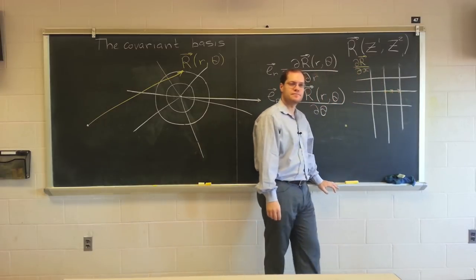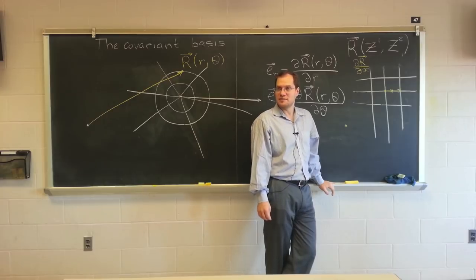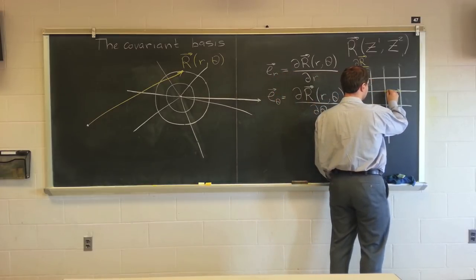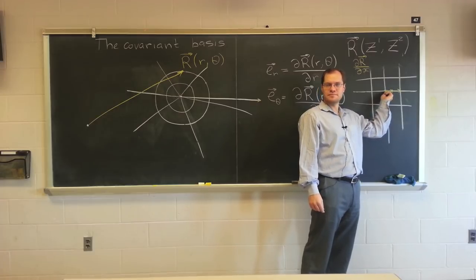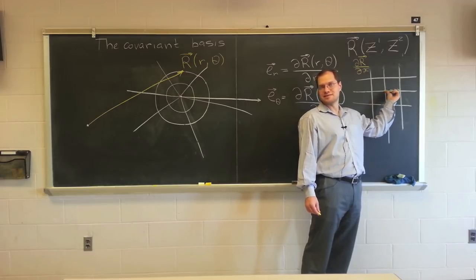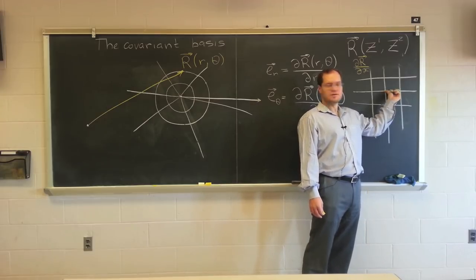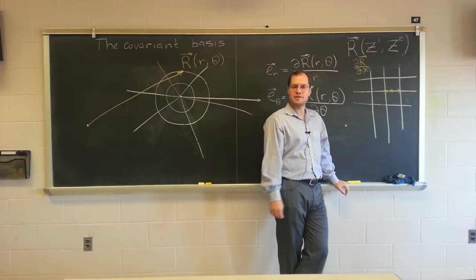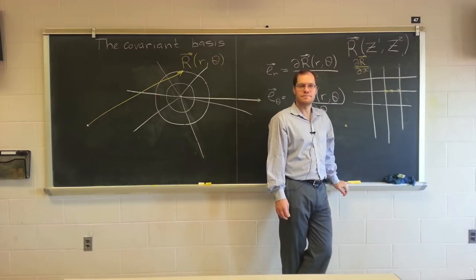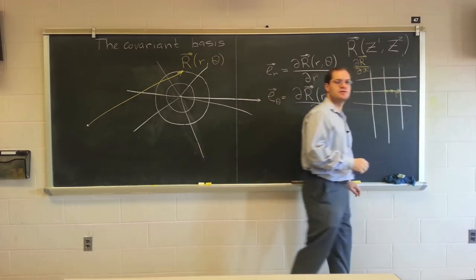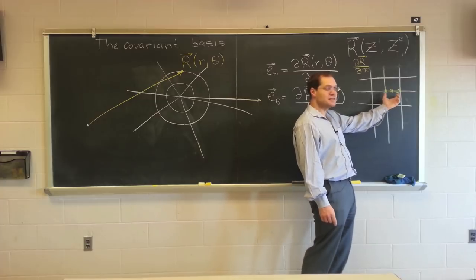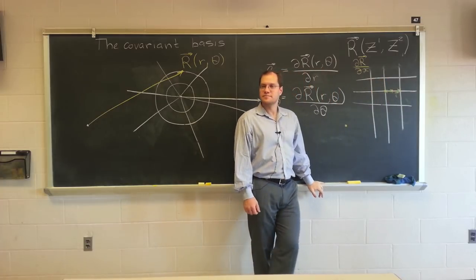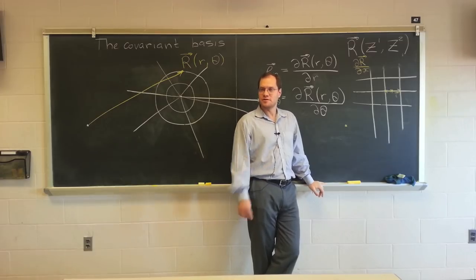In the limit as delta x goes to zero, it will just be this unit vector — also called i. So Alex, this partially answers your question: yes, it is a random definition, but at the very least it recovered i. Now i and j fall under this framework. So i and j can be thought of as dr/dx and dr/dy.